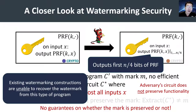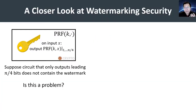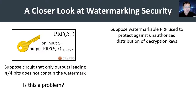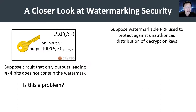In fact, if you look at all existing constructions of software watermarking for pseudorandom functions, they would be unable to recover the watermark from this kind of program. It turns out that this can actually be quite problematic in concrete applications. Imagine a scenario where we have a watermarkable PRF and we want to use this to protect the decryption keys in a symmetric encryption scheme. In this case, a program that outputs the first n/4 bits of a pseudorandom function might completely break semantic security of any encryption scheme that depends on it, and yet it would not be possible to recover the mark from this particular decryption program, because under the existing definitions, it does not preserve functionality.